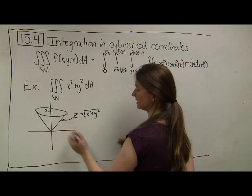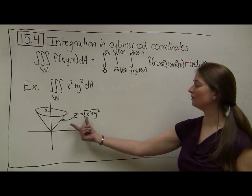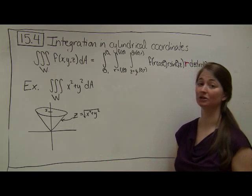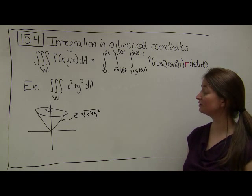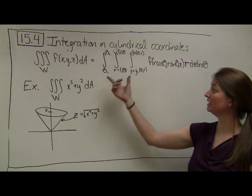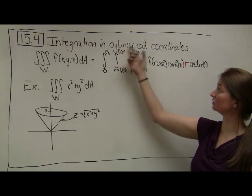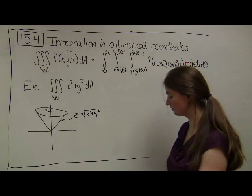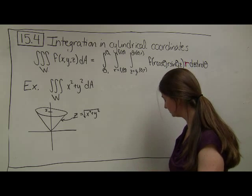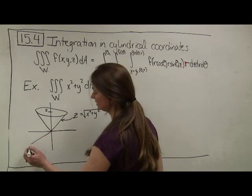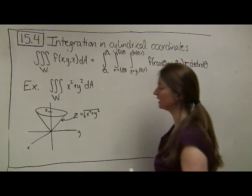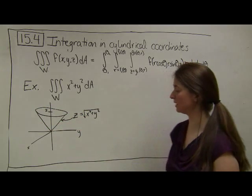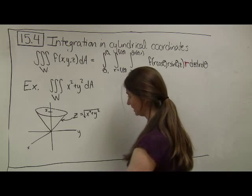The cone is given by the equation z equals the square root of x squared plus y squared — that's the side of the cone. I could write this in x and y coordinates, but it turns out that's going to be very messy. So instead, I'm going to show how to set this up in cylindrical coordinates. In cylindrical coordinates, I'm thinking of my x, y plane in terms of polar coordinates, in terms of r's and thetas.